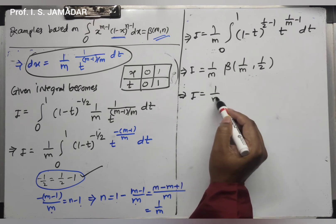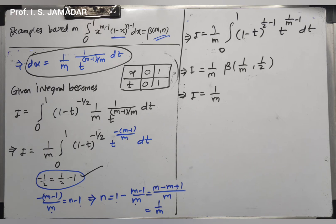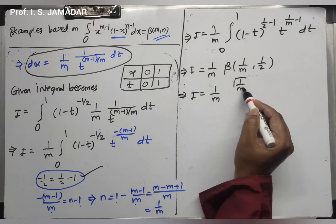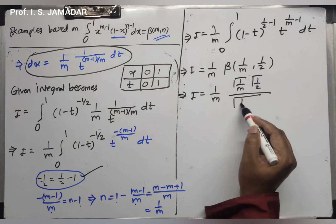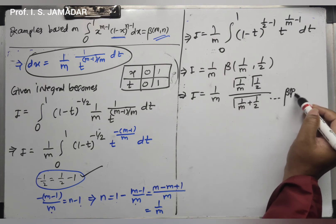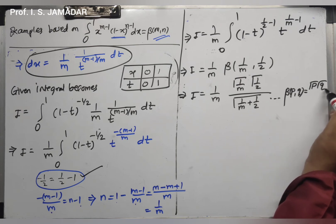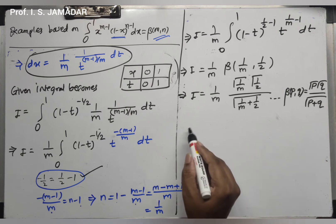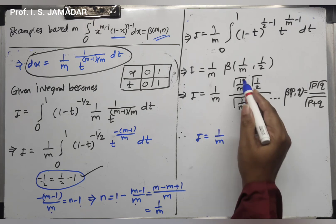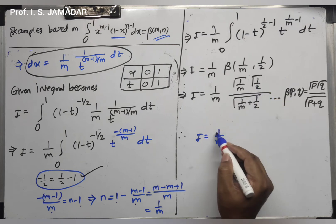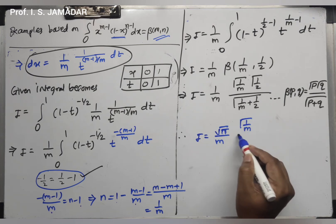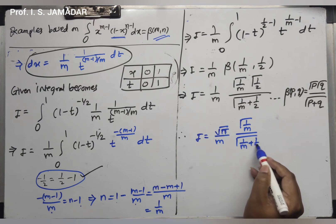Using the relation between beta and gamma, beta(1/m, 1/2) equals gamma(1/m) times gamma(1/2) divided by gamma(1/m + 1/2). Since gamma(1/2) equals √π, the final answer is I equals (1/m) times gamma(1/m) times √π divided by gamma(1/m + 1/2), which simplifies to (√π / m) times gamma(1/m) divided by gamma(1/m + 1/2).